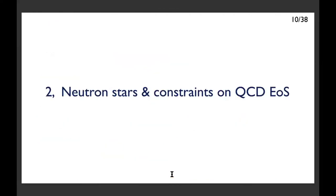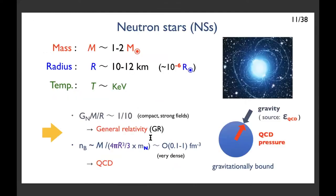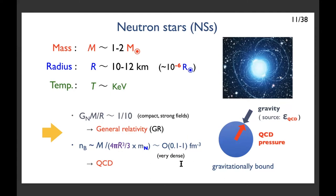Let me discuss the neutron star properties and constraints. Neutron stars are highly exotic: their mass is of order one to two solar masses, and their radius is very small, of order 10 to 12 kilometers — much smaller than the radius of the sun. Each temperature is of order a kiloelectron volt, so it can be regarded as zero temperature matter. Since a huge energy density exists within a very small domain, general relativistic effects are very important. One can estimate the density by dividing neutron star mass by the volume times nuclear mass — its density is of order one inverse cubic femtometer. This density scale requires a description based on QCD.